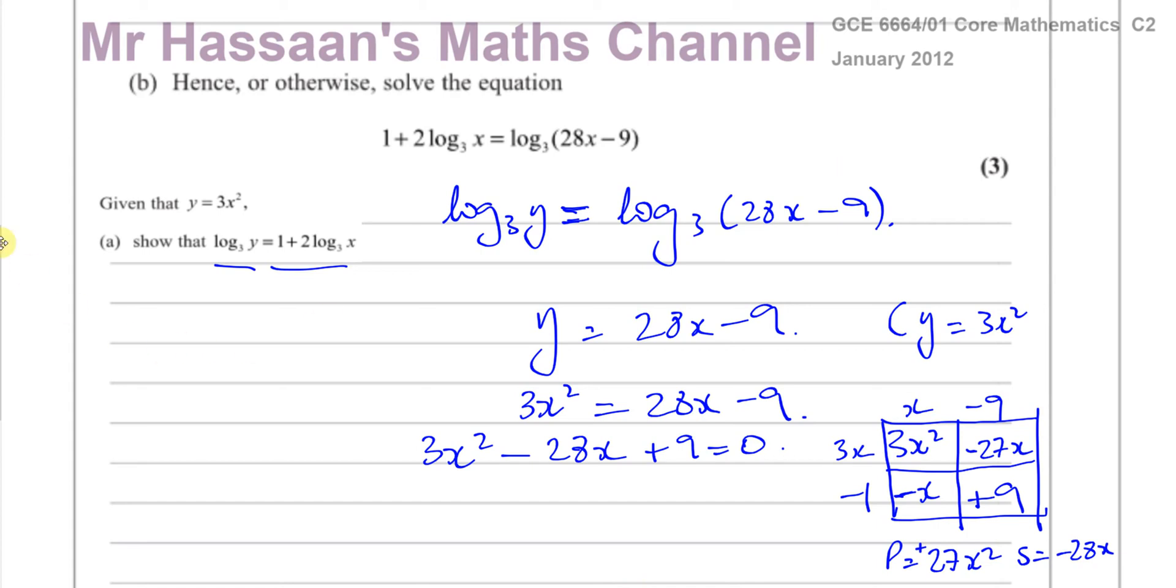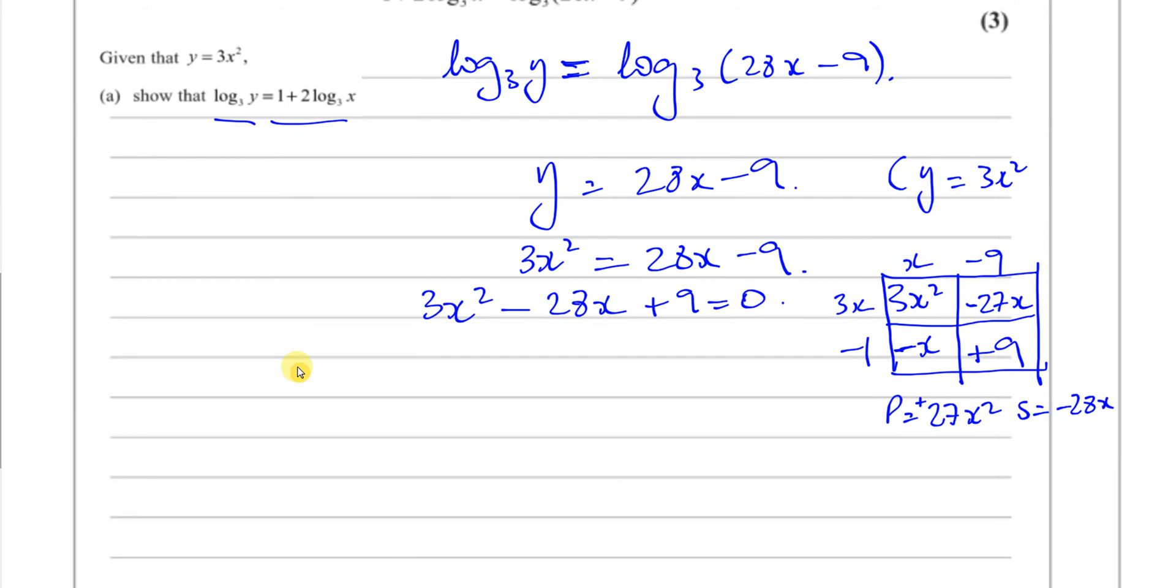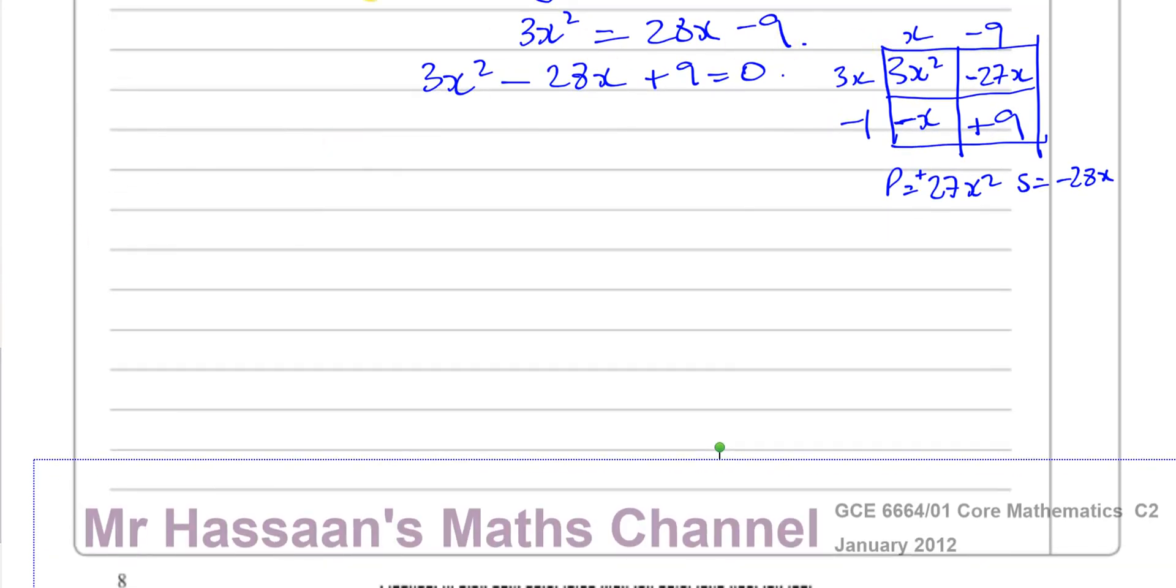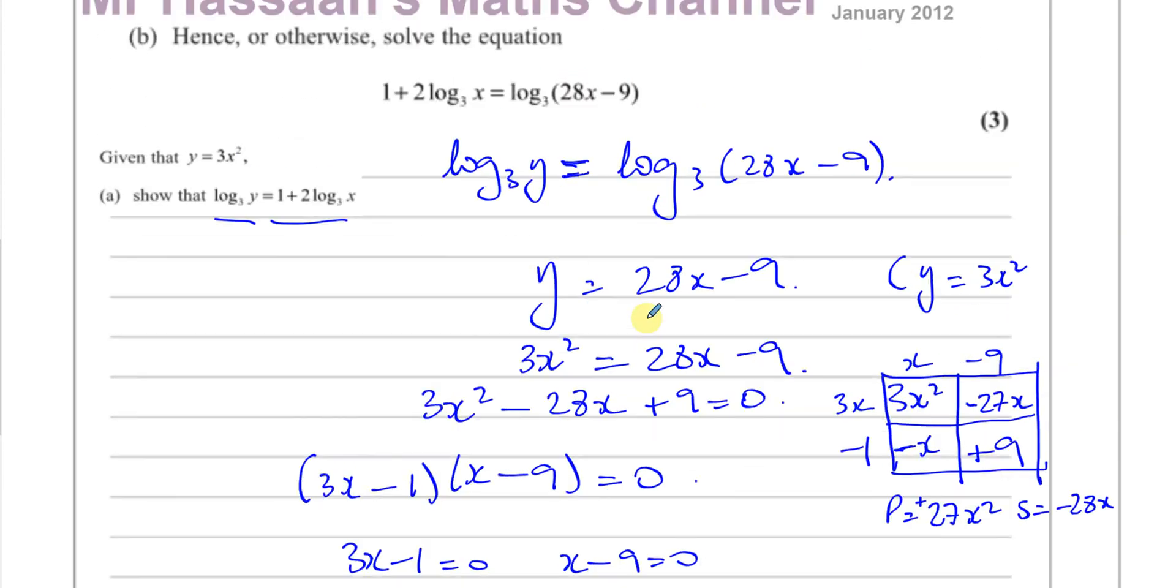So this expression now is equal to, we can say, we've got 3x minus 1 times x minus 9 equals 0. So we've got 3x minus 1 is 0, or x minus 9 is 0. So x is going to be 1 third, or x is going to be 9. And there we have the solution to this problem.